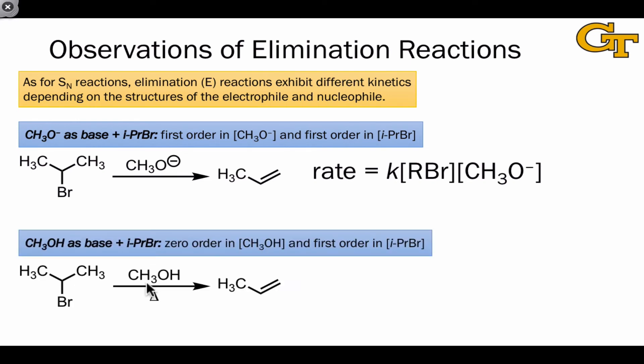When we change to a much milder base, methanol, we arrive at a different rate law that depends on only the concentration of alkyl halide. Base, methanol, is zero order. The change in orders suggests a change in mechanism.